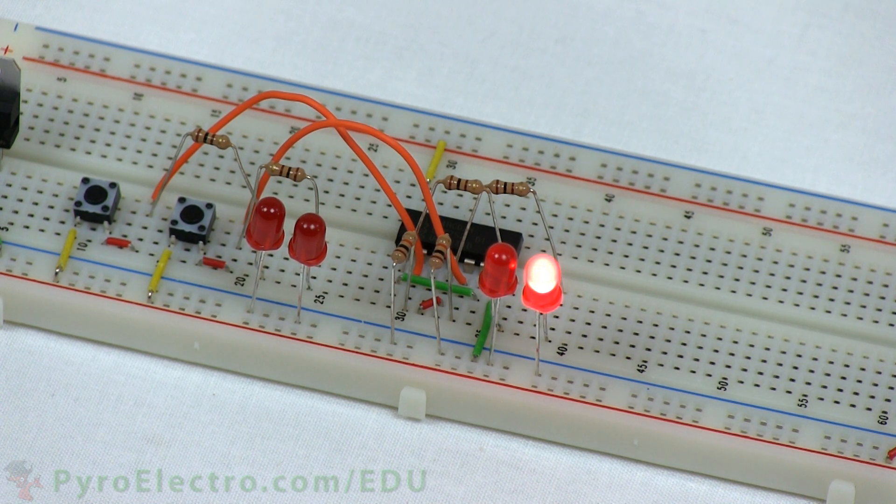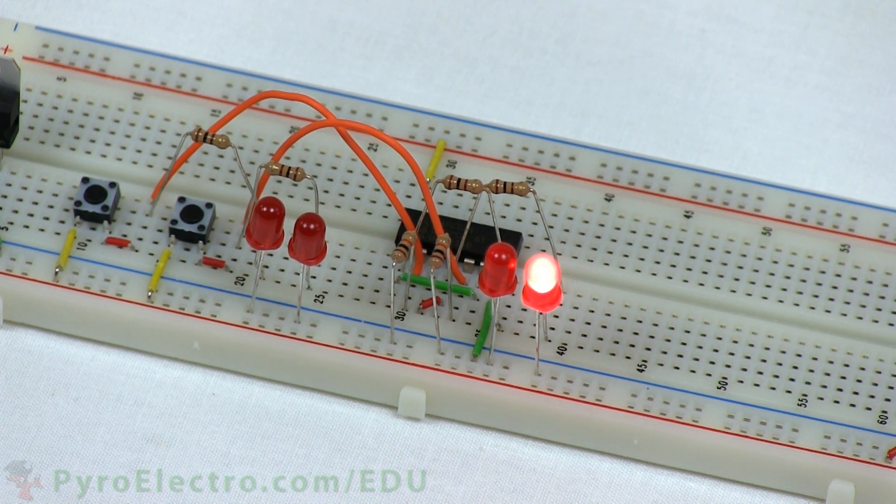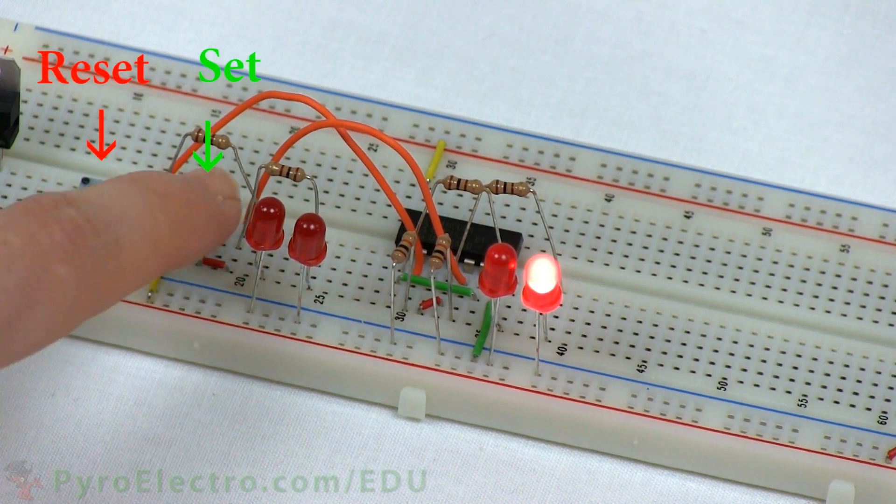Now following the truth table, if we push the set button, the latch output should turn on, as it does.